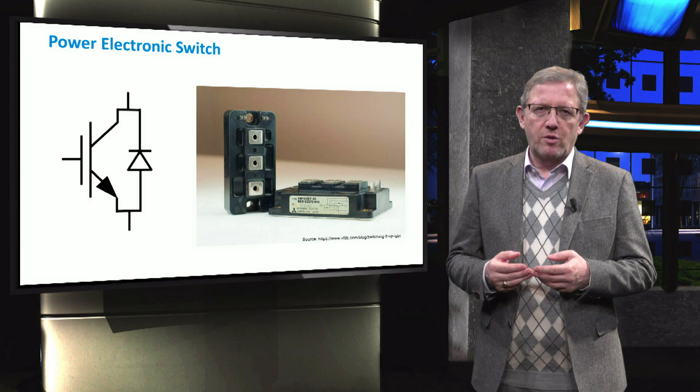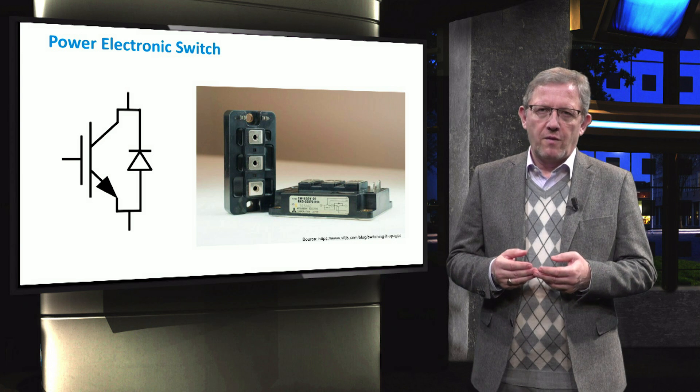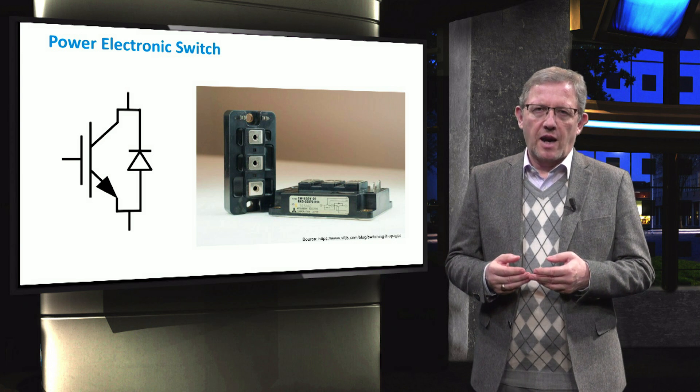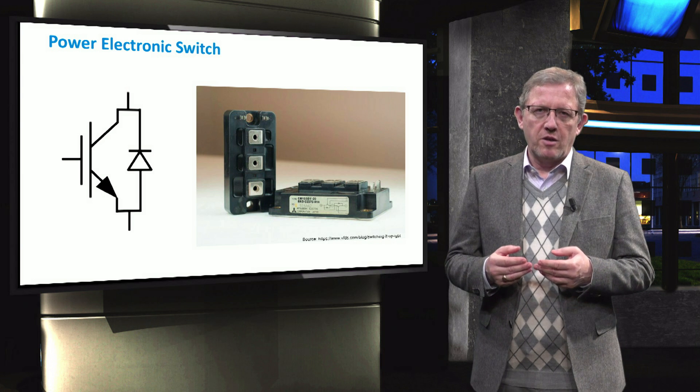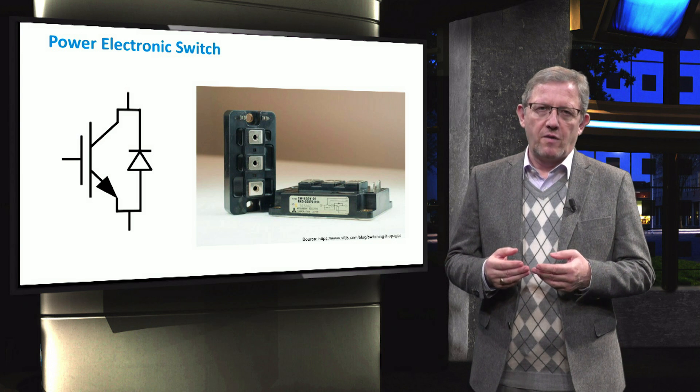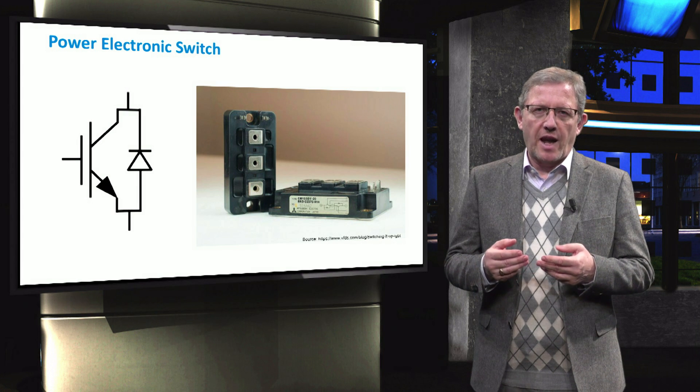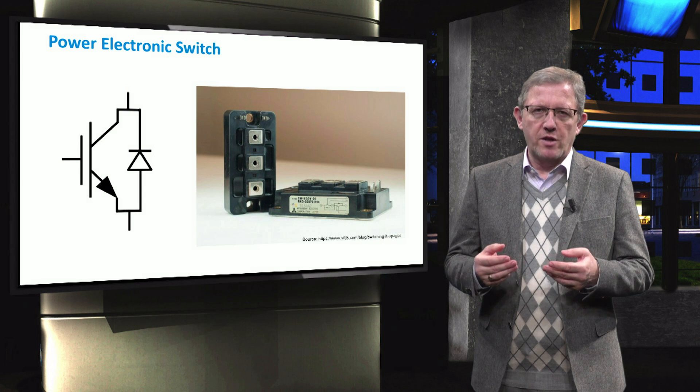In other words, they are able to turn on and turn off within a half of a microsecond. The new silicon carbide and gallium nitride-based switches turn on and off even faster, within tens of nanoseconds. In this particular IGBT switch, an anti-parallel diode is included that allows the reverse currents.